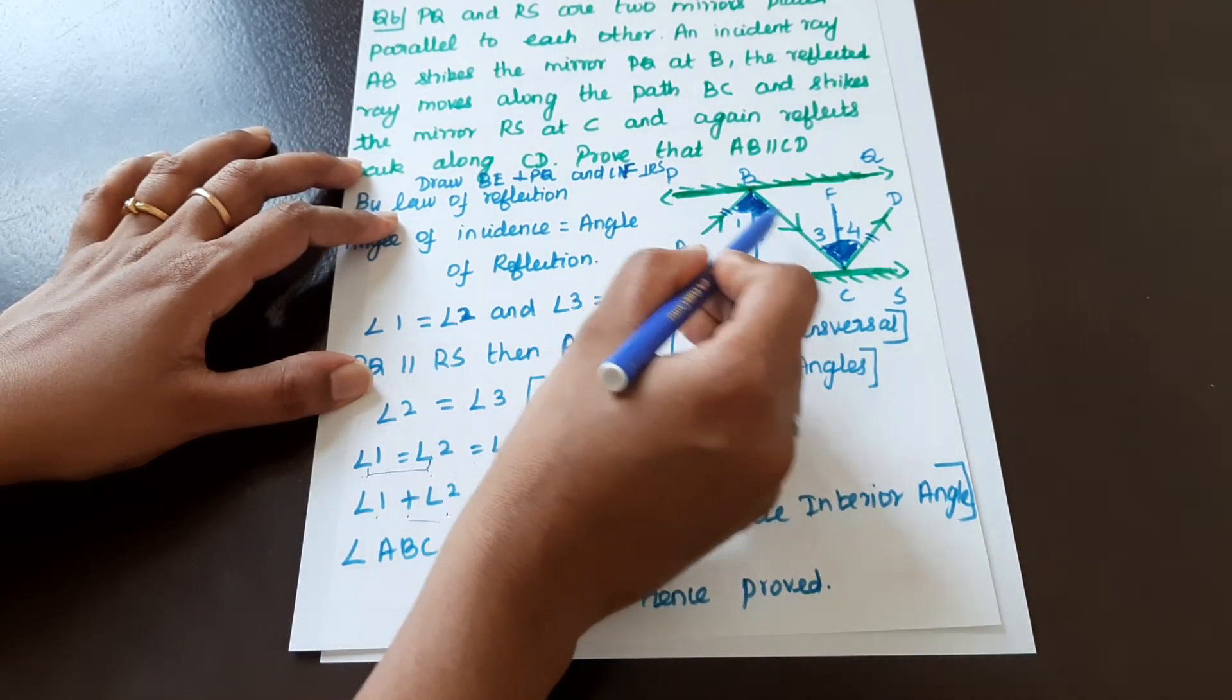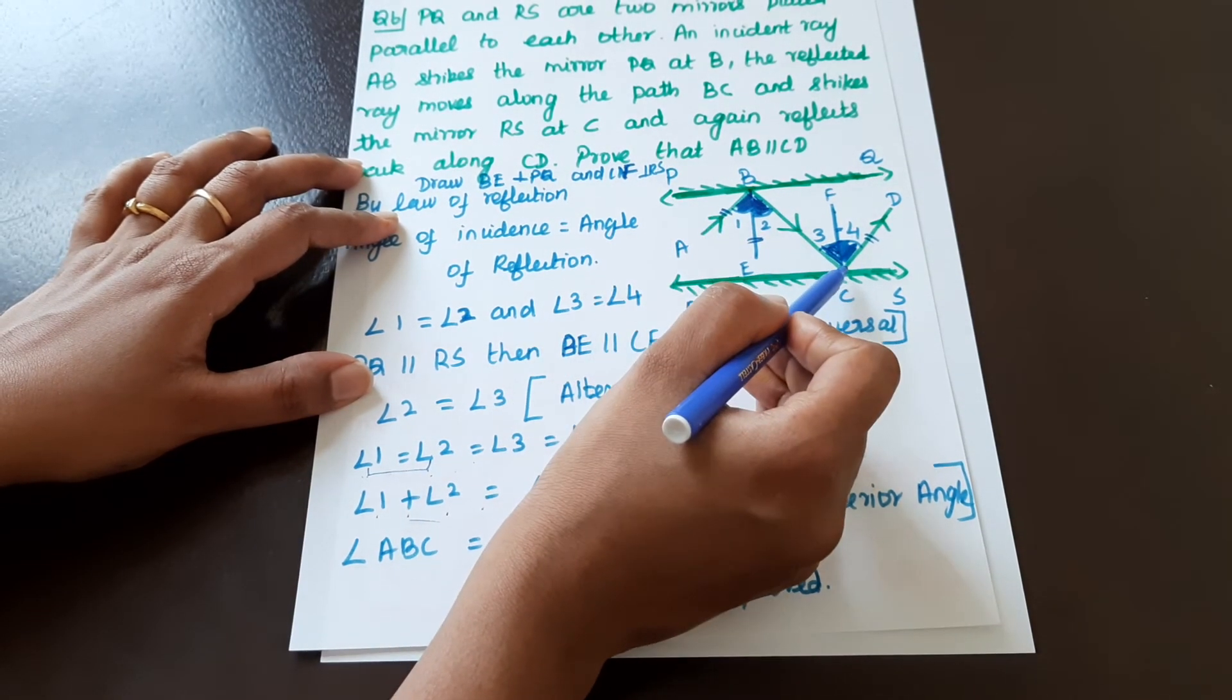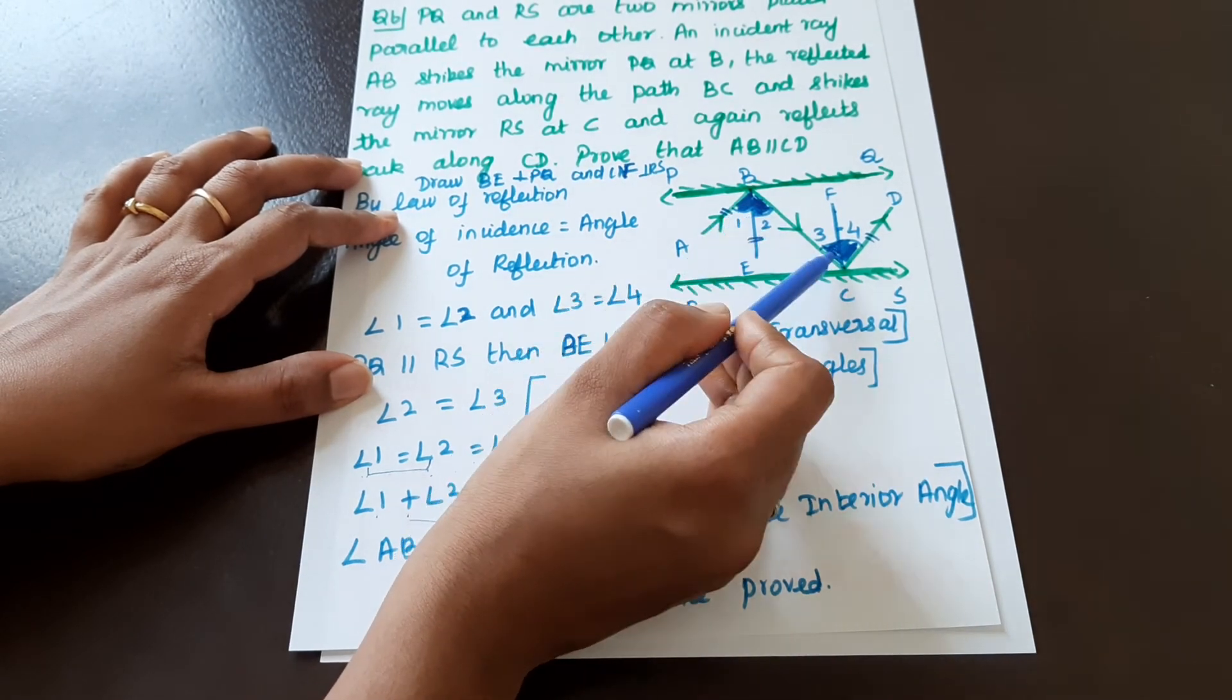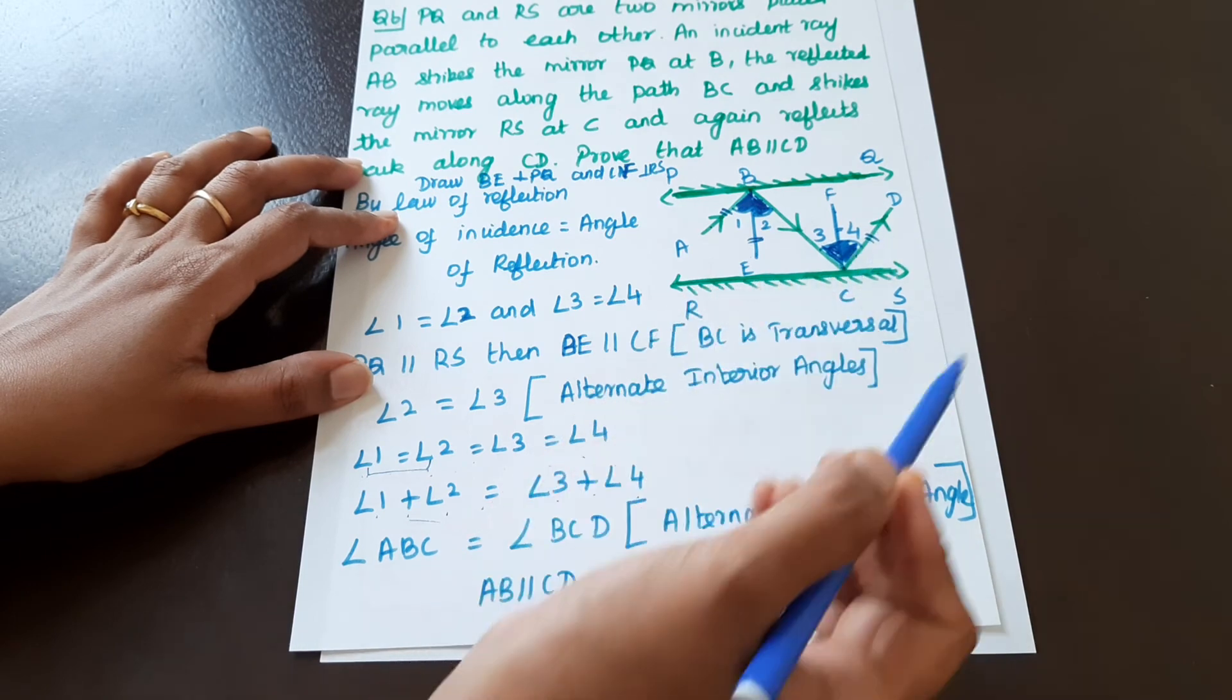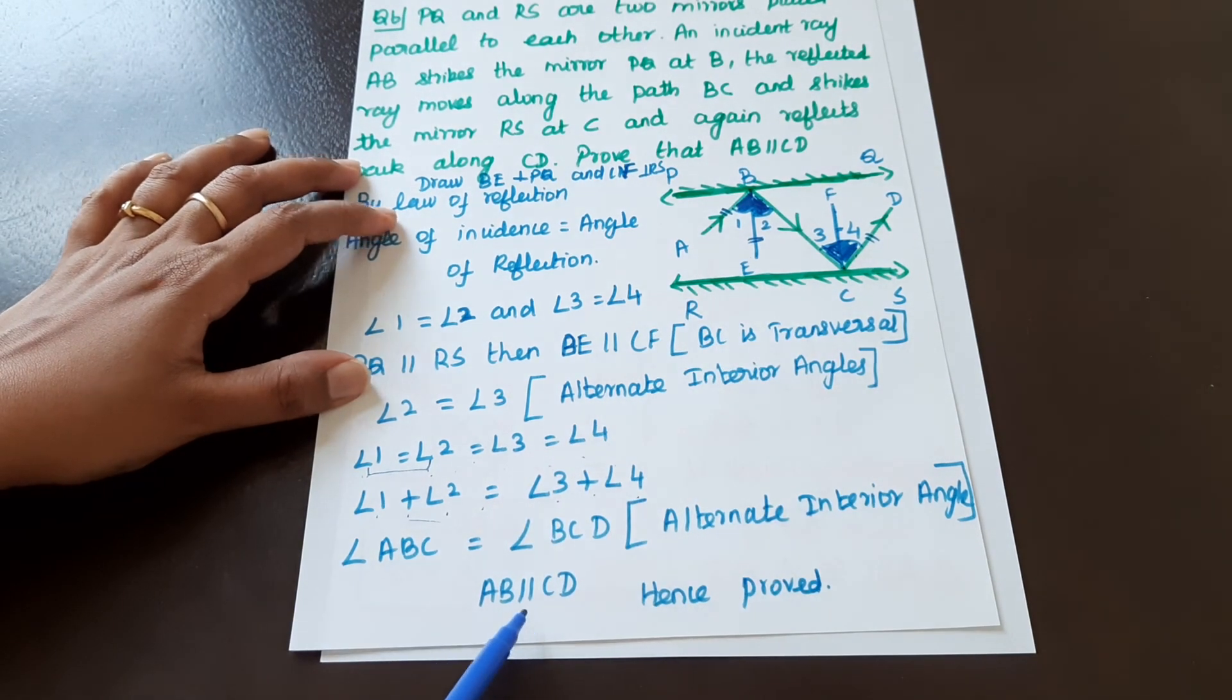These are alternate interior angles. Since alternate interior angles are equal, AB is parallel to CD. Hence proved.